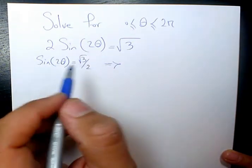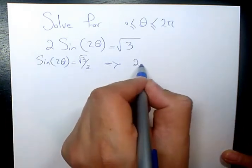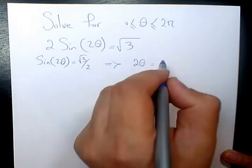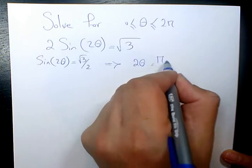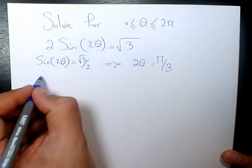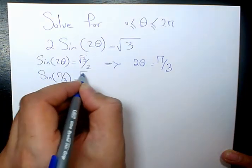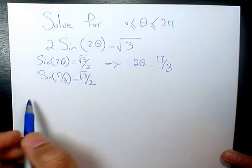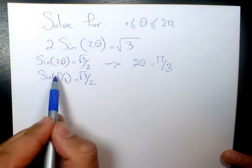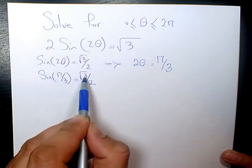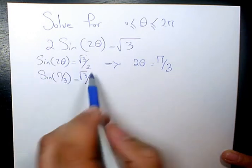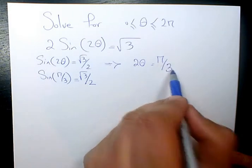And we know 2 theta in this case is going to be pi over 3. Why? Because sine pi over 3 equals to root 3 divided by 2. Based on these special angles, we know sine pi over 3 equals to root 3 divided by 2. So 2 theta equals to pi over 3.